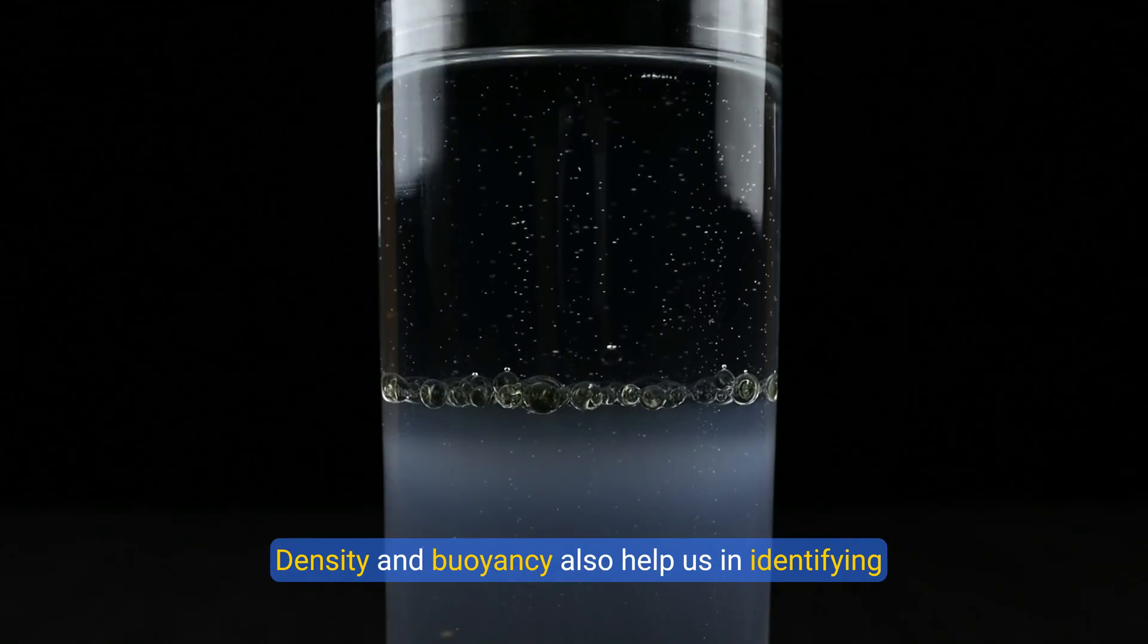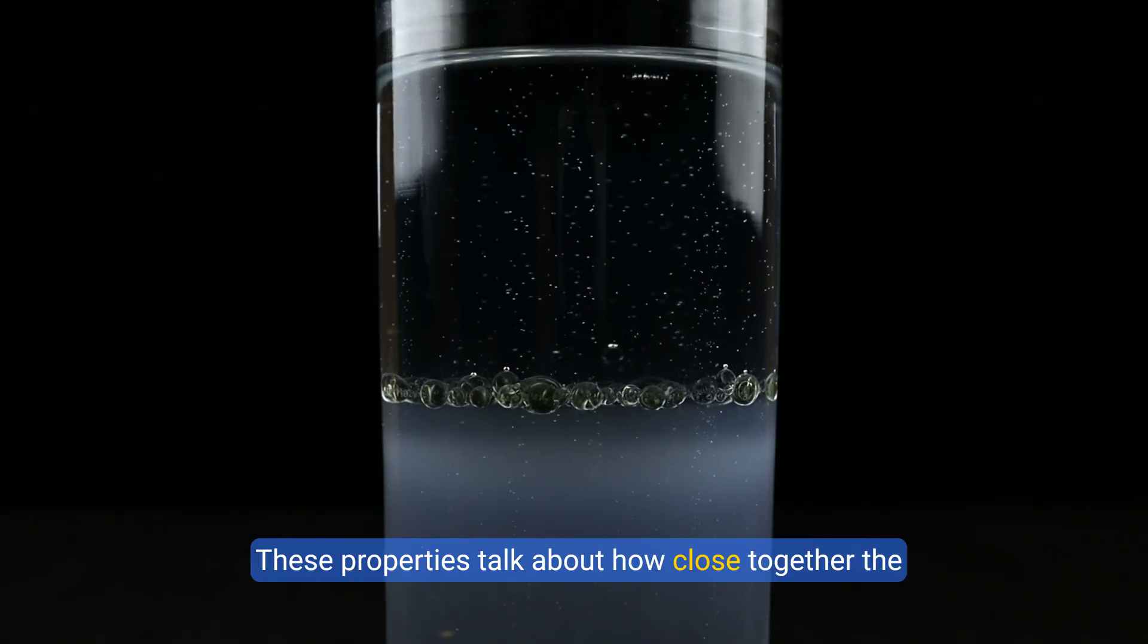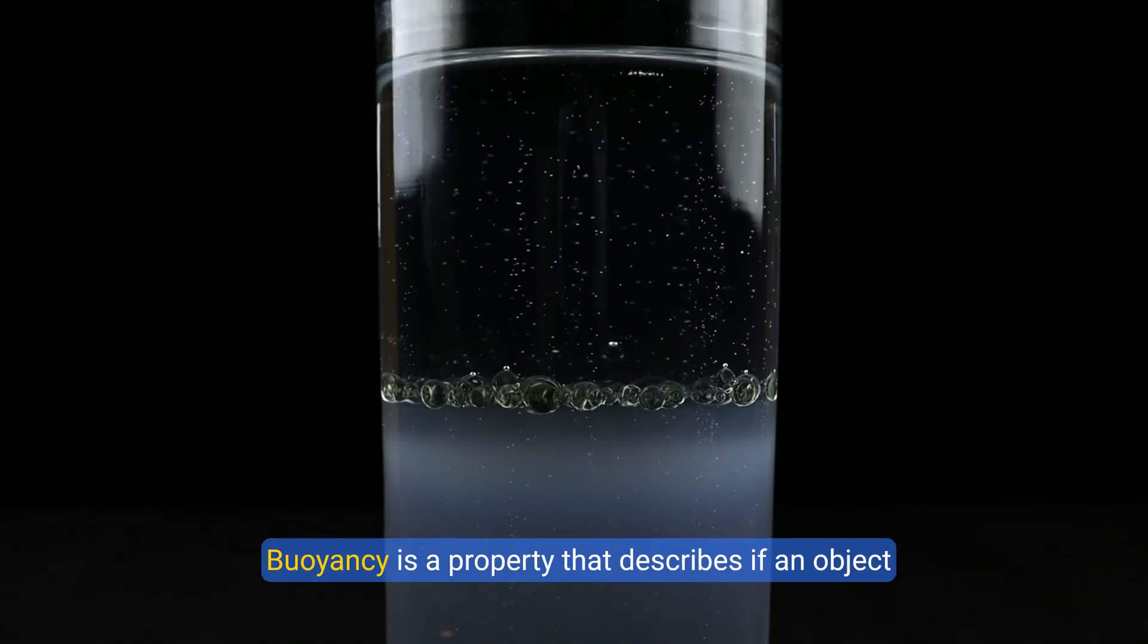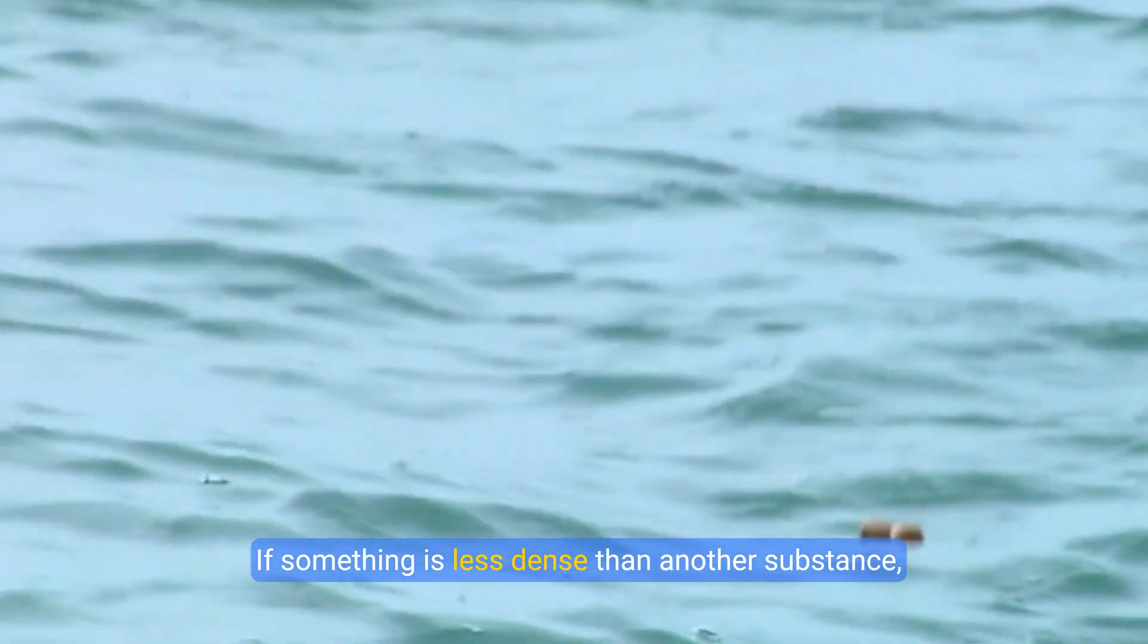Density and buoyancy also help us in identifying matter. These properties talk about how close together the particles of a substance are. Buoyancy is a property that describes if an object can float or not.